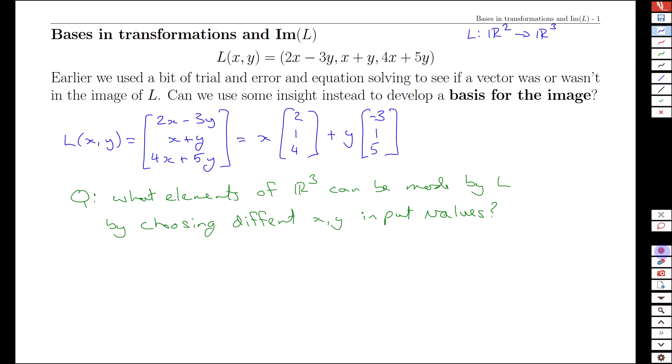Just looking at this output space, the result of doing a transform of x and y is that we get any linear combination of specifically these two vectors: the vector [2, 1, 4] and the vector [-3, 1, 5].